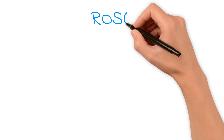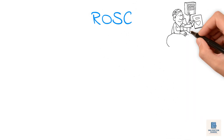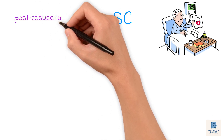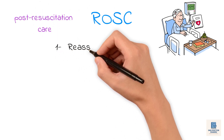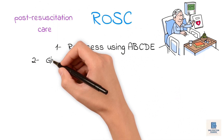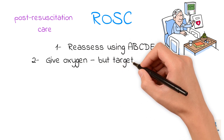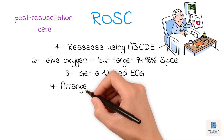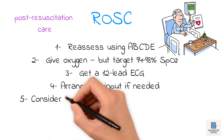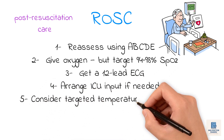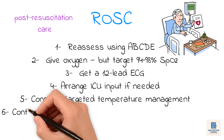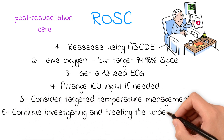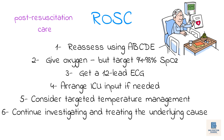If you achieve ROSC — return of spontaneous circulation — your job isn't done yet. You must now start post-resuscitation care. Reassess using ABCDE. Give oxygen, but target 94 to 98% SpO2. Get a 12-lead ECG. Arrange ICU input if needed. Consider targeted temperature management, and continue investigating and treating the underlying cause.